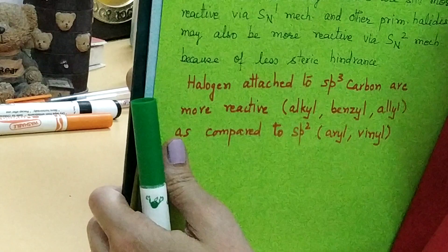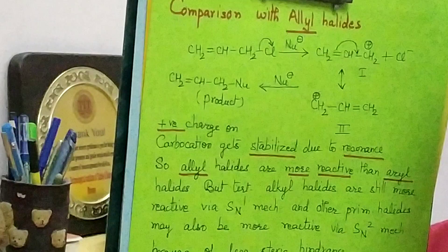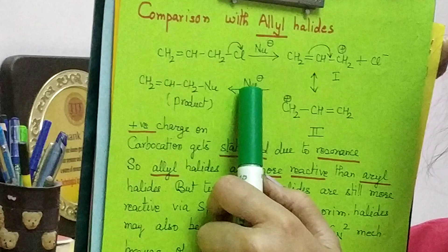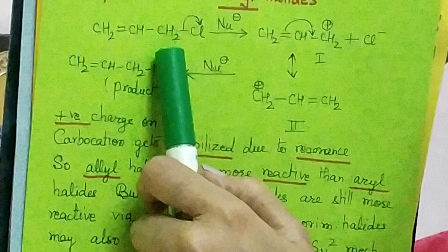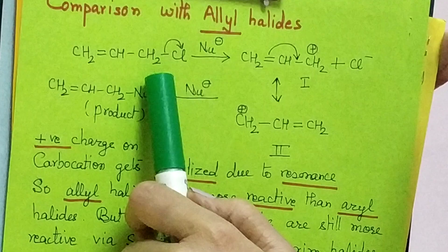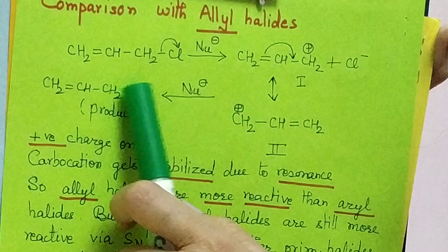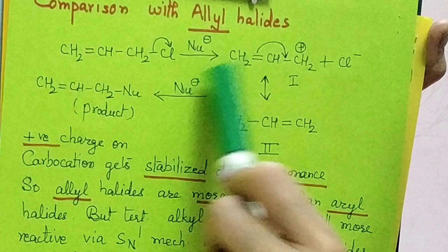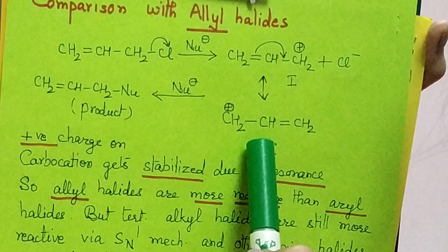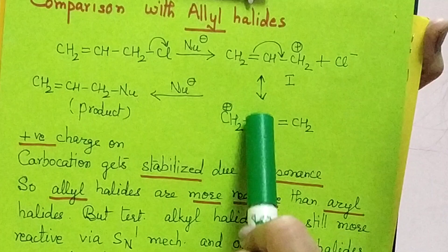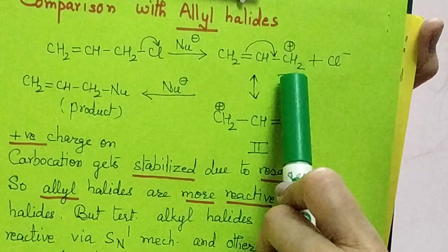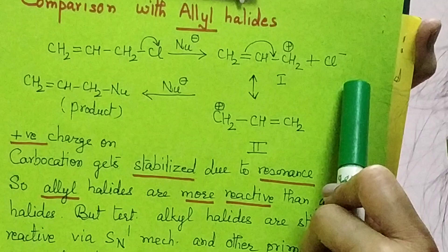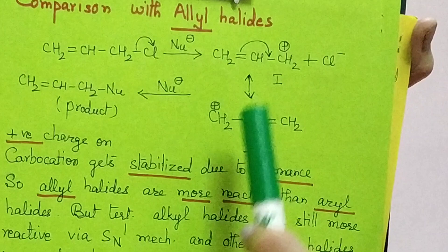Next we compare the reactivity of allyl halides with alkyl halides. In allyl chloride, the double bond is present but the halogen is attached to a singly bound sp3 hybridized carbon atom. Here, nucleophilic attack results in the formation of a carbocation intermediate — an allyl carbocation — and the chloride ion gets displaced. This allyl carbocation is resonance stabilized.